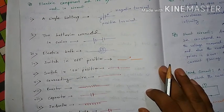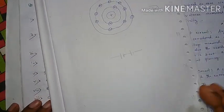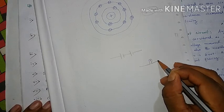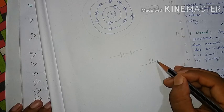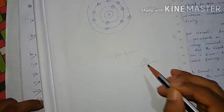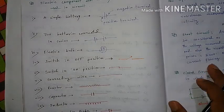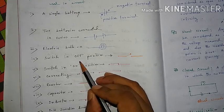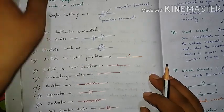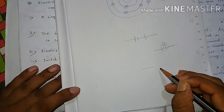The electric bulb is represented by a circle in the circuit diagram. The switch is represented by its own symbol, and can be shown in the OFF position in the circuit.